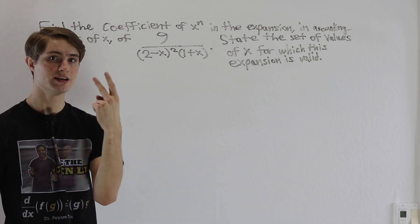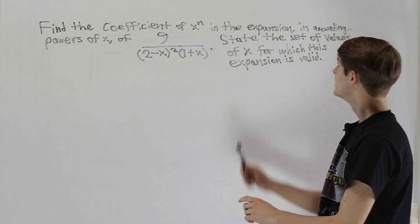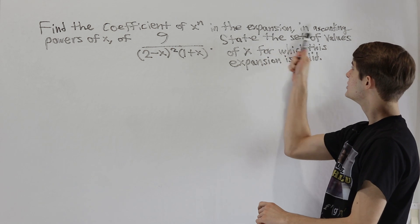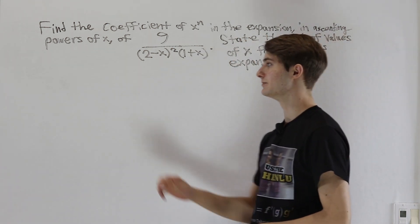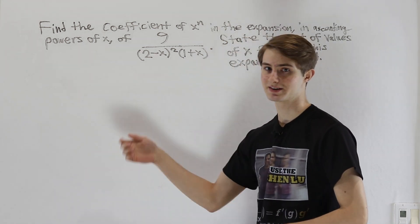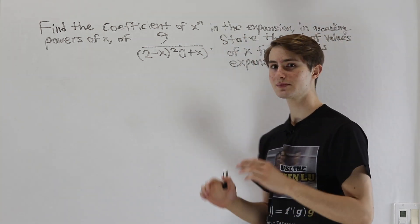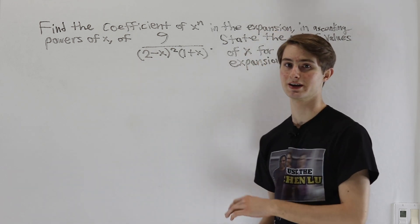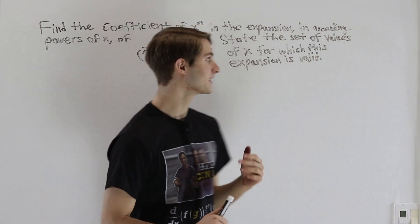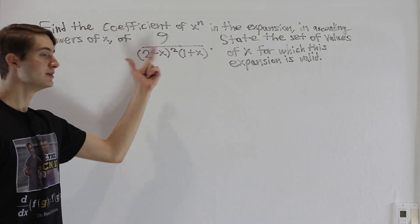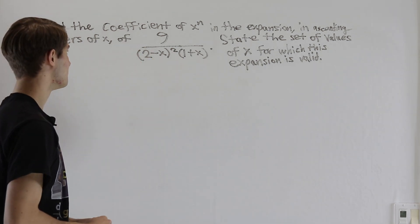This question is asking us to do two things. The first is the expansion in ascending powers of x, which means x to the first power, x to the second power, x to the third power, and so on. In other words, this is just talking about a basic Taylor series — specifically a Taylor series centered at zero for this function.